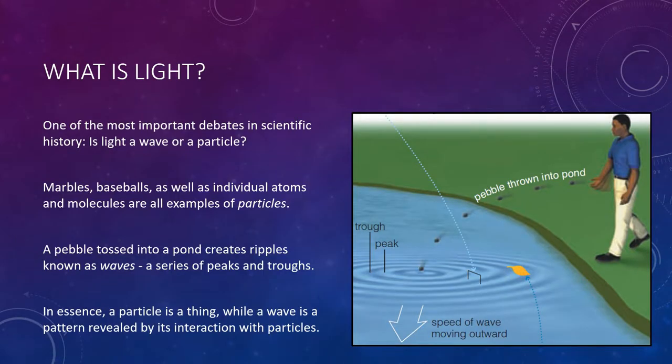So we have to dig a bit more deeply. This is going to get into a little bit of physics here. Newton himself guessed that light is made up of countless tiny particles. However, other scientists soon conducted experiments that demonstrated that light behaves like a wave. Thus began one of the most important debates in scientific history. Is light a wave or a particle? To understand this question and our modern answer to it, we must first understand the differences between particles and waves.